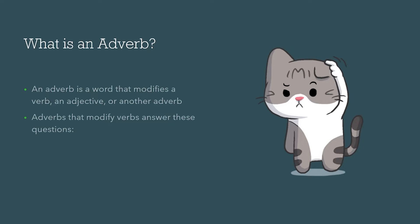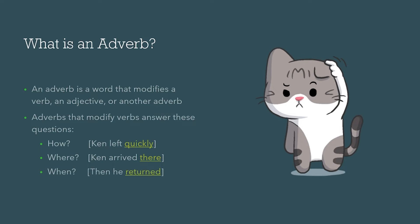Adverbs that modify verbs answer these important questions: How? — 'Ken left quickly.' Quickly is our adverb. Where? — 'Ken arrived there.' When? — 'Then he returned.'